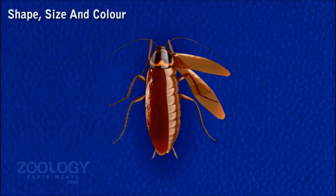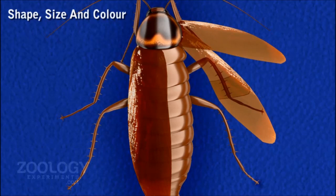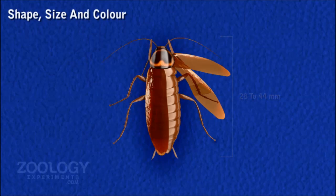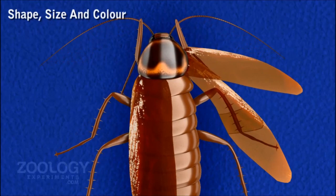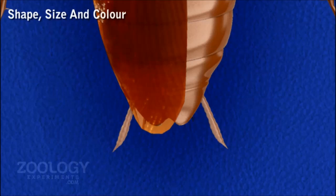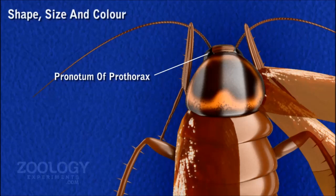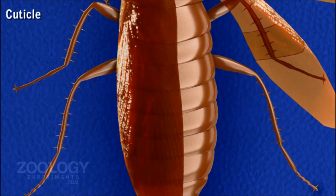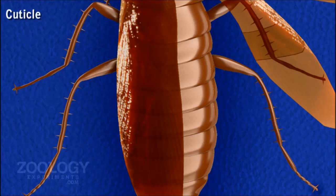The body of a cockroach is narrow, elongated, bilaterally symmetrical, and dorso-ventrally flattened. The adult measures from 28 to 44 millimeters in length and 8 to 10 millimeters in width. The color is shining reddish-brown with a pale yellow area around the edge of the tergum of the pronotum of the prothorax and two dark patches over it. The entire body is covered externally by a non-living, brown-colored, hard, jointed cutaneous exoskeleton composed of several plates or sclerites, formed by the cuticle of the body wall.